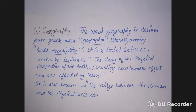Geography. The word geography is derived from the Greek word 'Geographia', literally meaning Earth's description. It is a social science and can be defined as the study of physical properties of Earth, including how humans affect and are affected by them. It is also known as the bridge between human and physical sciences.